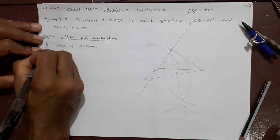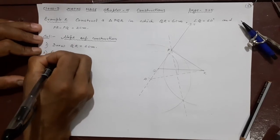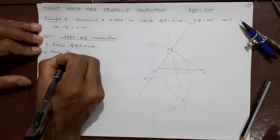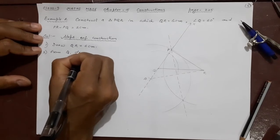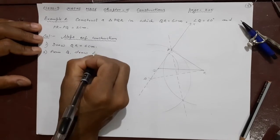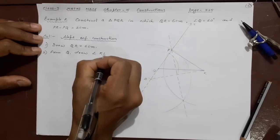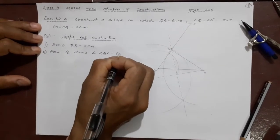What is the next step? From B you have to take the angle here. From Q draw or construct angle RQx equal to 60 degree. How? 60 degree given in the question.